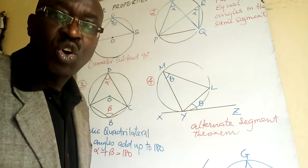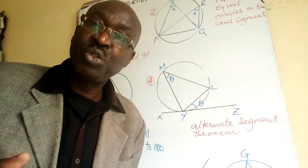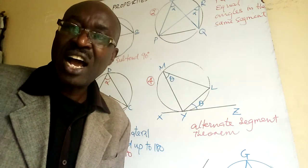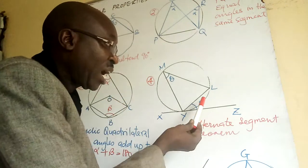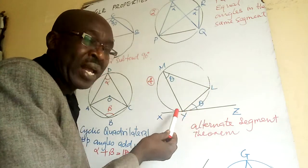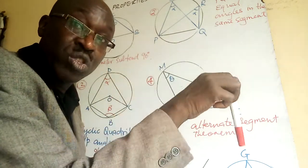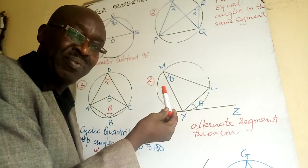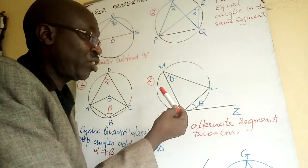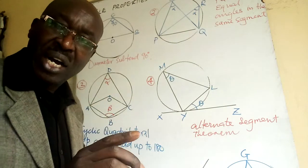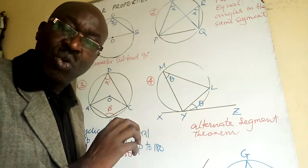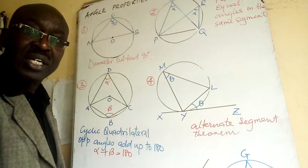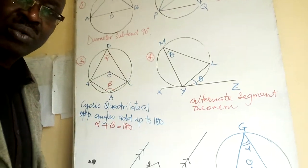That is the alternate segment theorem. When a chord LY makes an angle theta to the tangent, the same chord LY subtends the same angle but in the alternate segment. Remember, anytime you answer a question you have to give the size of the angle and the reason behind it.